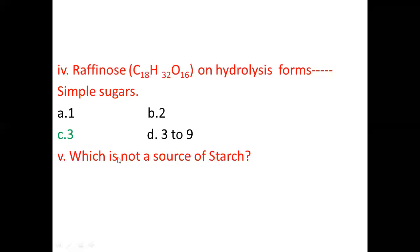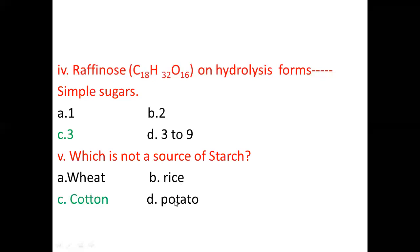Number five: which is not a source of starch? Starch is a polysaccharide. Wheat is a carbohydrate, rice is a carbohydrate, potato is a carbohydrate — but cotton is not a carbohydrate. Cotton is not a source of starch.